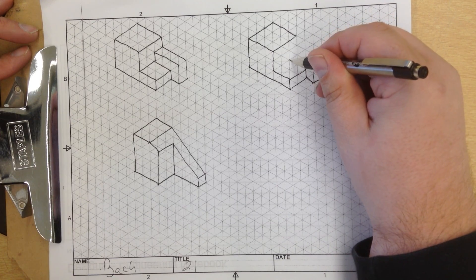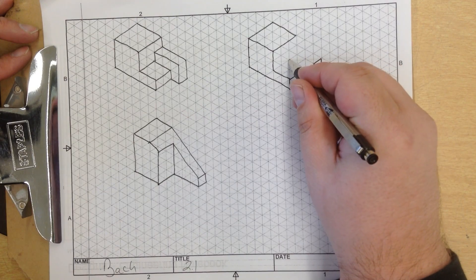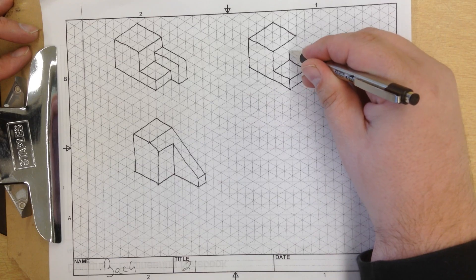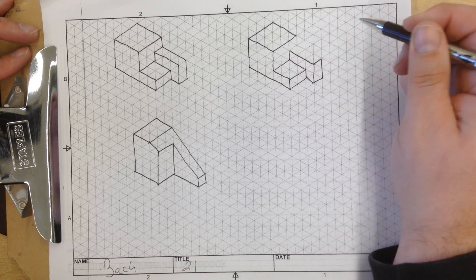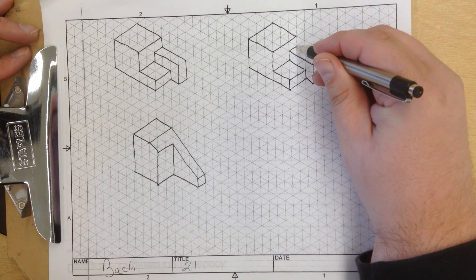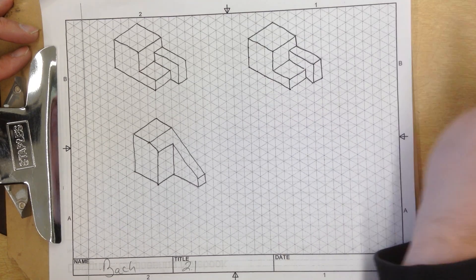If we check out this one, it goes 2 units over, just like so. 1 unit up. Then we connect the lines just like so. 1 unit over, connect the lines, and a line straight down.